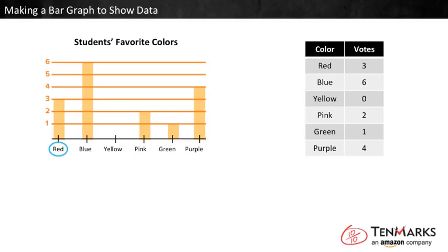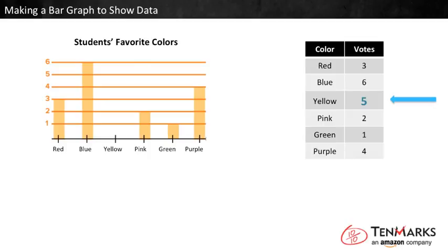The bar above red reaches up to the three, so red got three votes. Now let's see what it would be like to add some data to the bar graph. Yellow got zero votes, but let's imagine instead that yellow got five votes. Find yellow on the bar graph — we would need to add a bar to show five votes. It would reach the line for five, so color a bar above yellow that reaches up to the five.